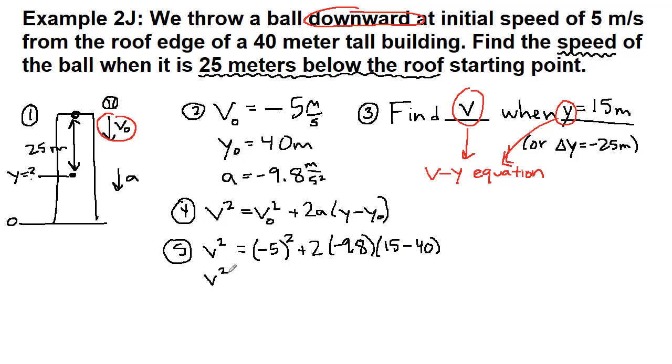All right, so let's simplify this a little bit. V squared is equal to 25. The negative sign is in the parentheses, so it is also squared. And now we have two times negative nine point eight times negative 25. So that becomes a positive 490. So v squared is equal to 515.